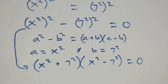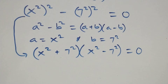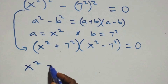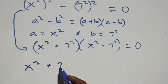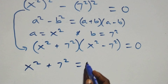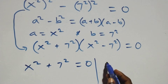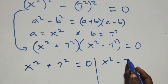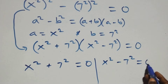This becomes (x squared plus 7 squared)(x squared minus 7 squared) equals zero. We now have two possible cases: the first is x squared plus 49 equals zero, or x squared minus 49 equals zero.